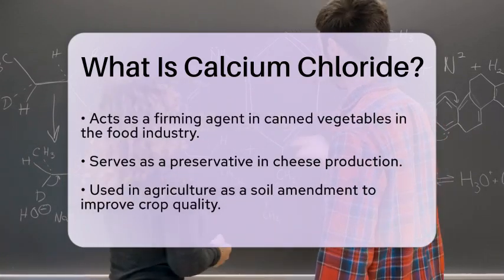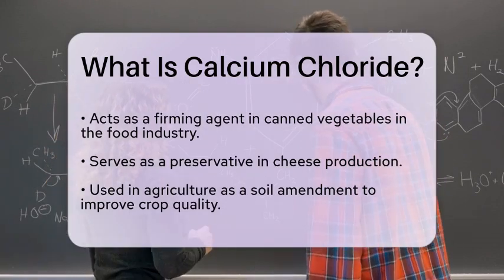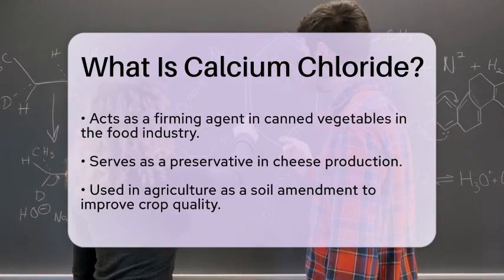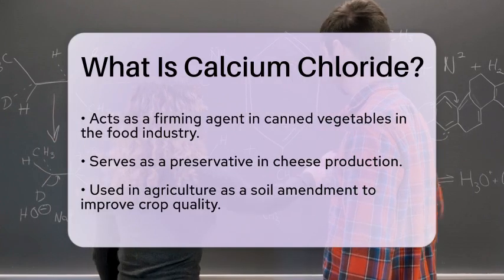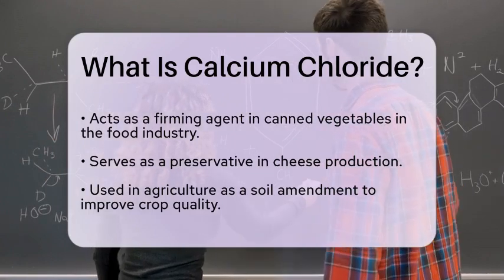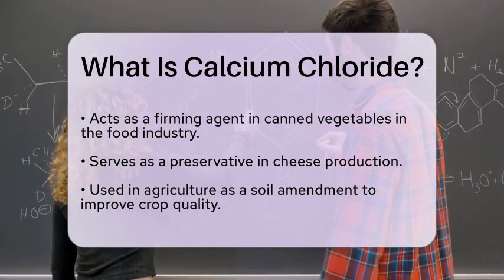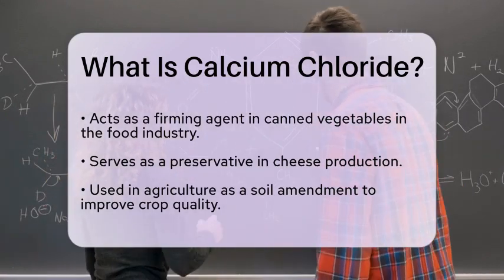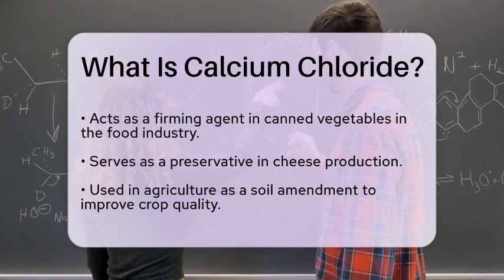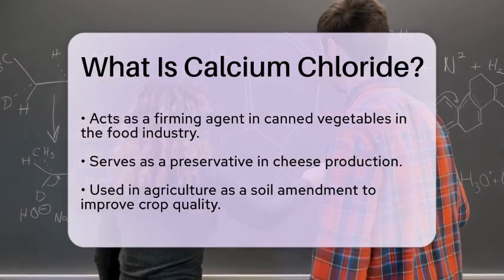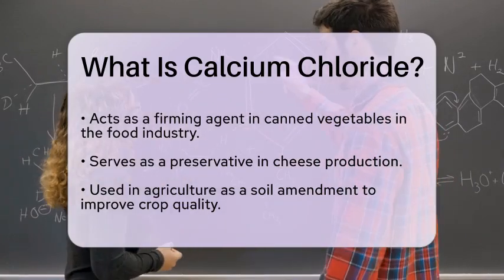Furthermore, calcium chloride is utilized in various industrial processes, including the production of plastics and the manufacture of cement. It is also employed in swimming pools to increase the calcium content of the water, which helps prevent corrosion of pool equipment.